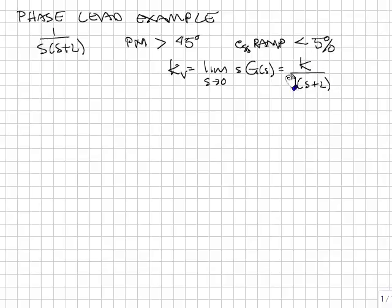So I'm going to write just a simple proportional feedback here. This is the open loop plant with proportional feedback with some gain. I want to know what value of k do I have to have in order to satisfy this ramp error.